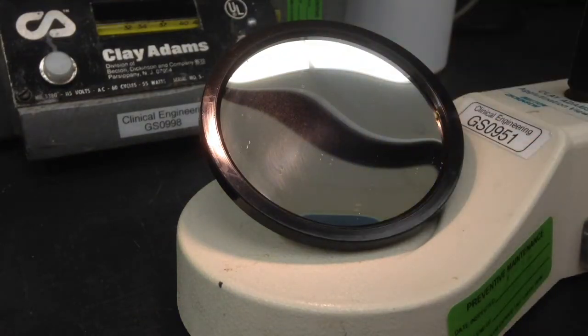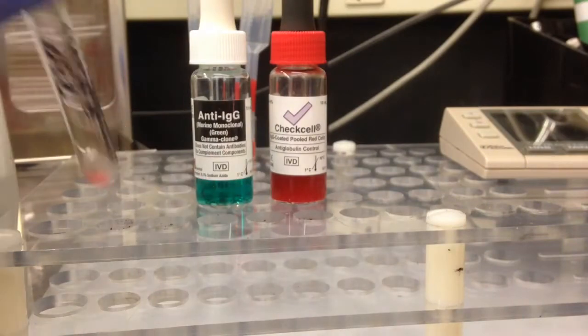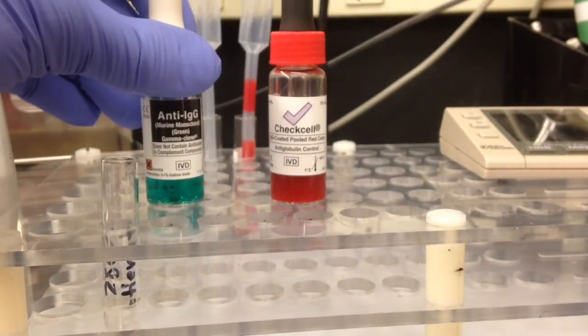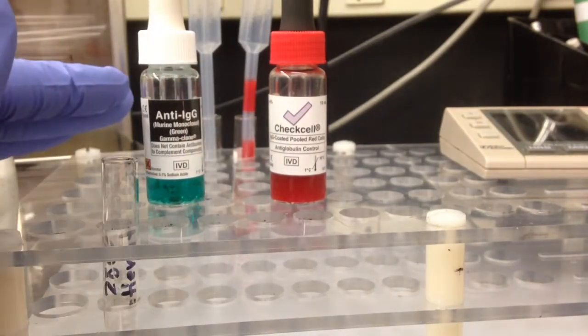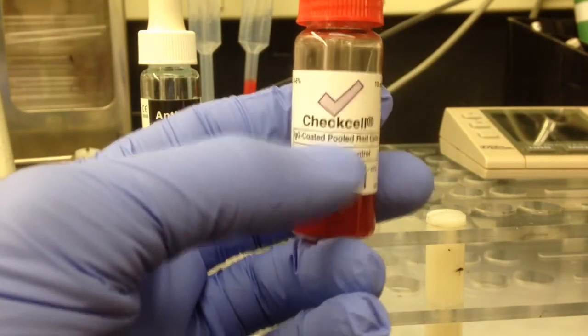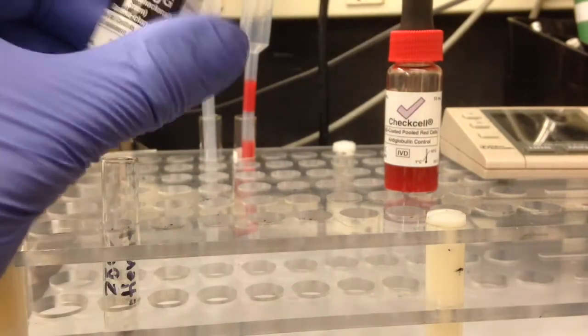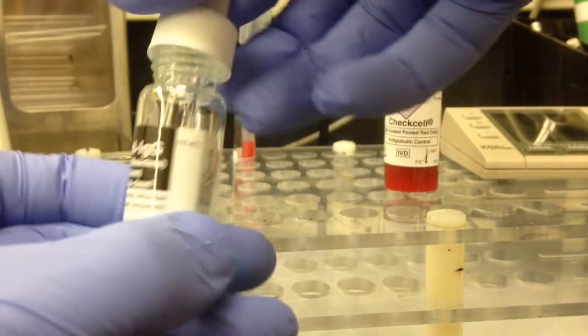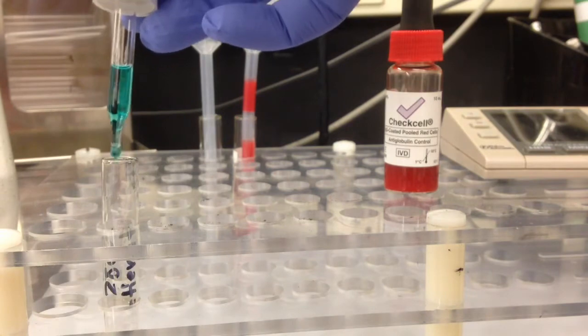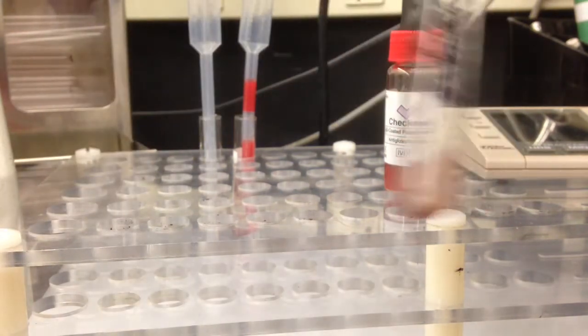After we're done re-suspending the cell button, the next step is to wash the cells to get rid of any unbound serum proteins. I did forget to mention that we're going to need check cells. I already washed them. We're going to add two drops of the anti-human globulin to the washed specimen and then mix it up.